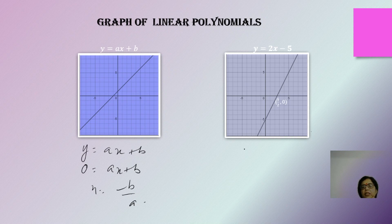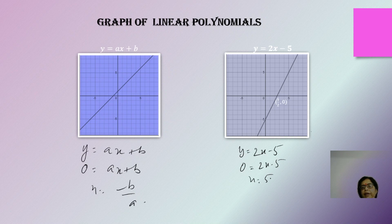For example, if y = 2x - 5, and if y is 0, then the line is intersecting the x-axis at the point where 0 = 2x - 5, so x = 5/2. You can see that 5/2 and 0 are the coordinates of that point. In a linear polynomial, the graph line will intersect the x-axis at one point only and it will always be a straight line.